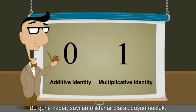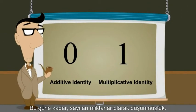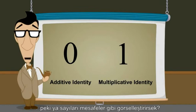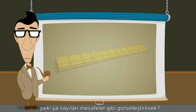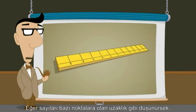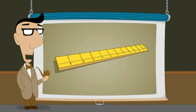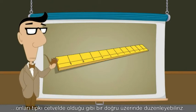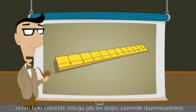Up until now, we have thought of numbers as quantities. But what if we visualize numbers as distances? If we think of numbers as representing distances from some point, then we can arrange the numbers on a line, like the numbers on a ruler.